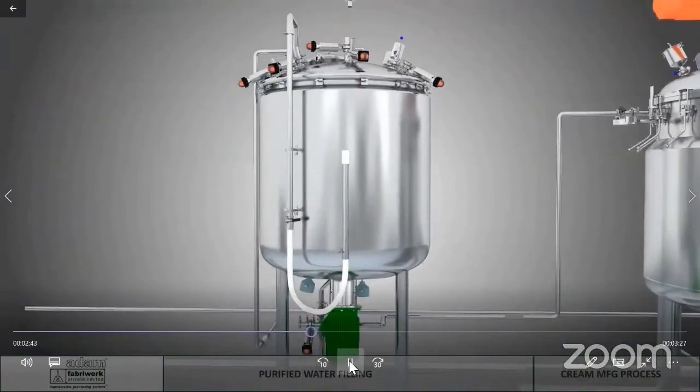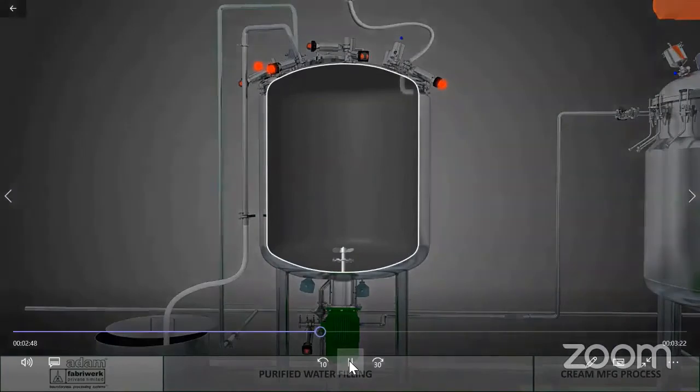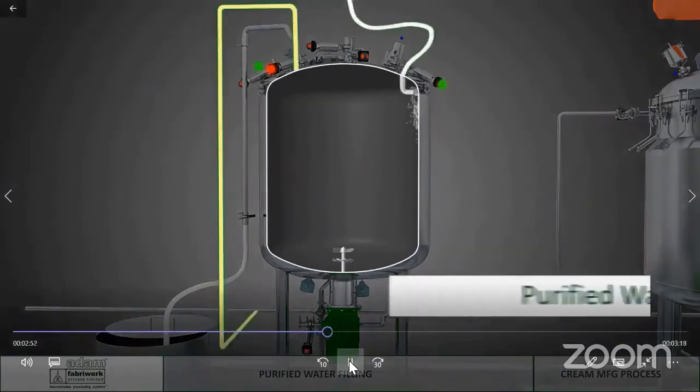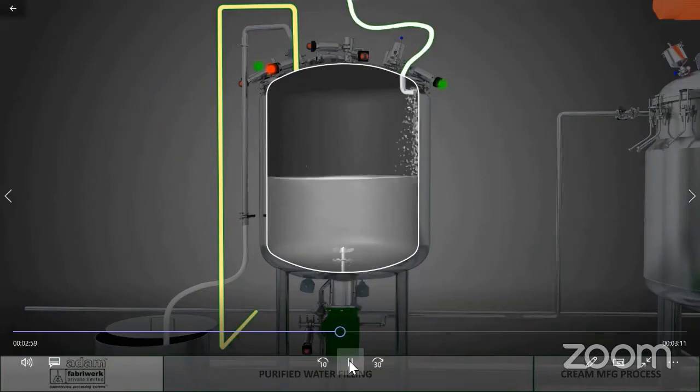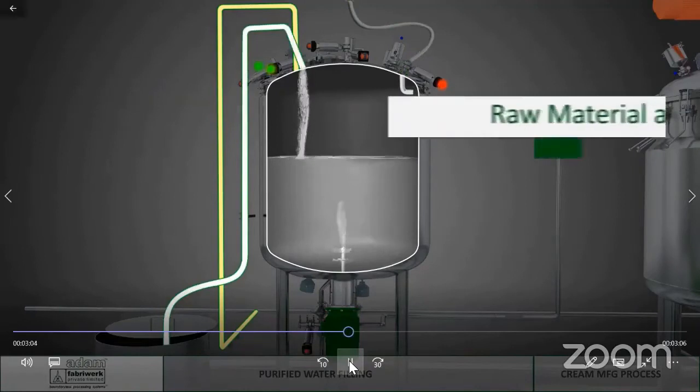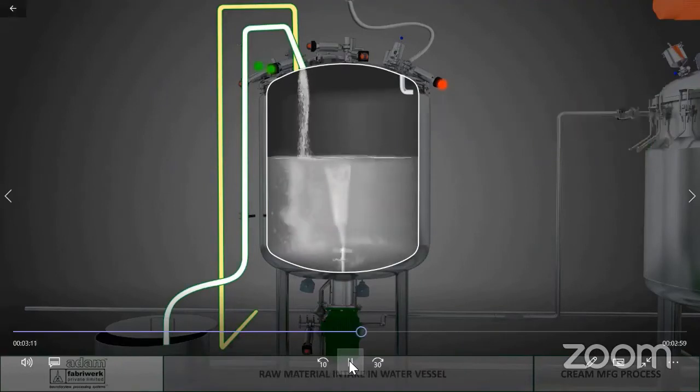The water phase vessel also works on the same principle. Water is taken into the vessel and then specific carbomers are added into the vessel and dissolved into the water through a bottom sawtooth cutter, a propeller, or a high shear mixer as the case may be. All mixer configurations are customized for specific operations. Again, the advantage of transfer by vacuum cannot be replaced by any other mechanism.